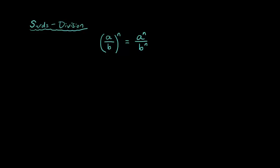Applying that with surds, we have the square root of a over b is the same thing as the square root of a over the square root of b. So it's the same thing as the index law. Applying this rule to solve a problem: